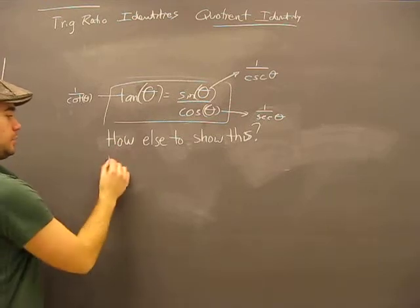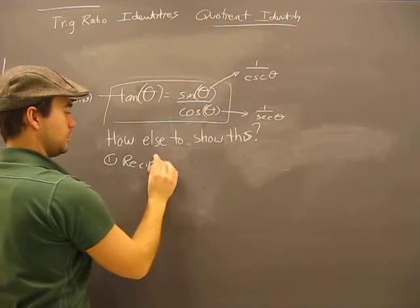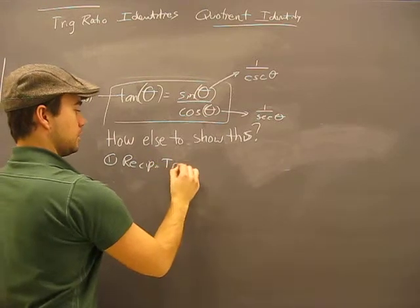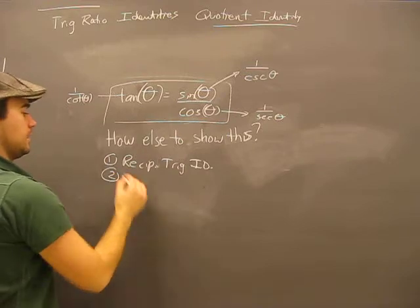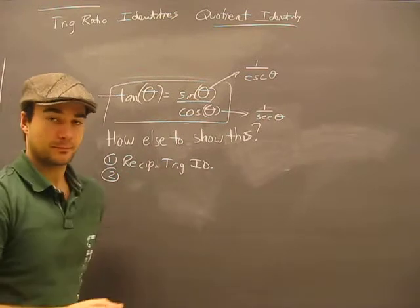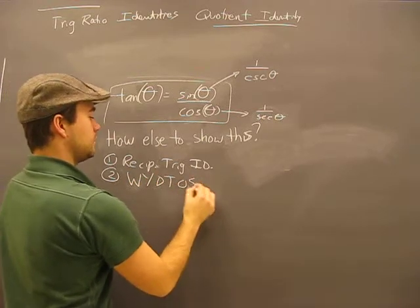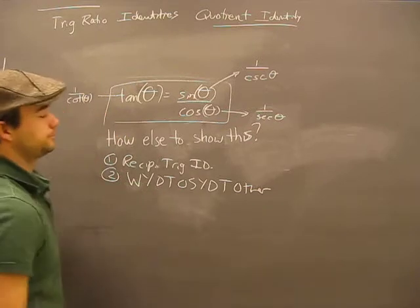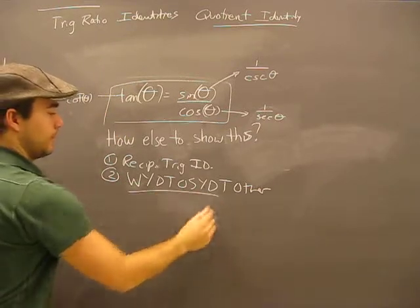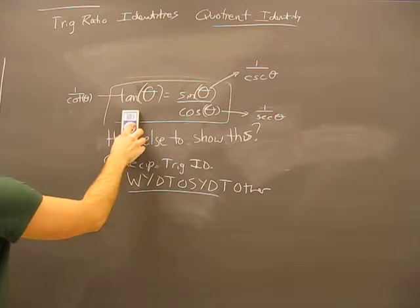The other thing is reciprocal trig identities. And then the other thing is grade 7, so no big deal, nothing's scary. What you do to one side, you do to other. So what does that mean for this? Watch.